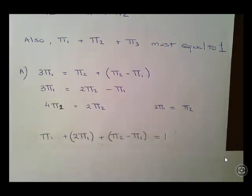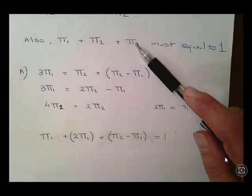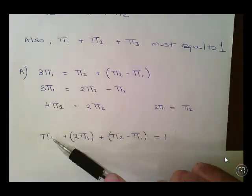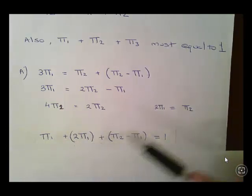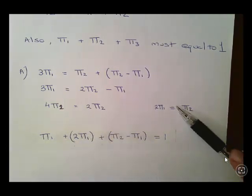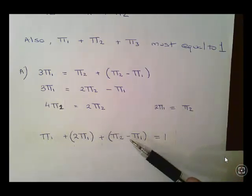Now what I'm going to do here is put them into this formula here. So I have π1. I have π2 is equal to 2π1. That's from here, that's using equation a. And using equation b, we found π2 minus π1. That was π3. π2 minus π1. And that's all equal to 1.